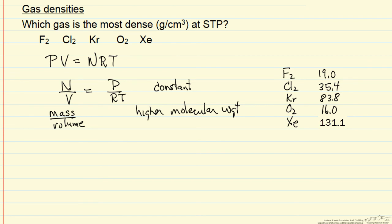But now we have to be careful. 19 is for one atom; we have two atoms in the molecule. We have to multiply that by 2, and that by 2, and that by 2. However, even with that, we can see that xenon has the highest molecular mass, and so it's going to have the highest mass density.